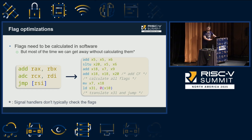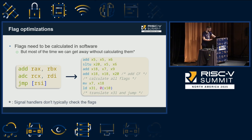In the case that we do know where a jump will land, we check the block or blocks that it will land in, and if the flags are overwritten there as well, we don't emit them here either.